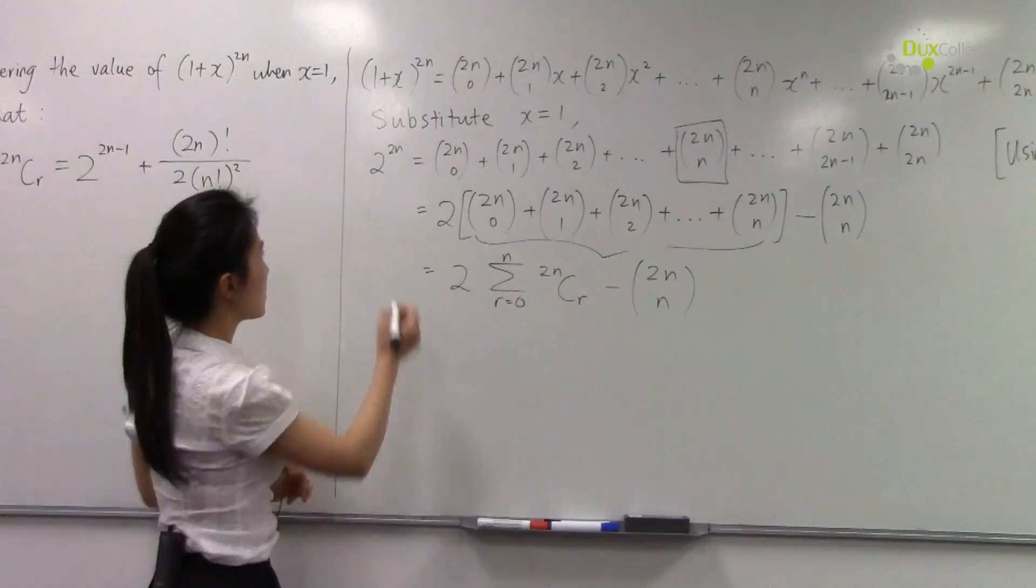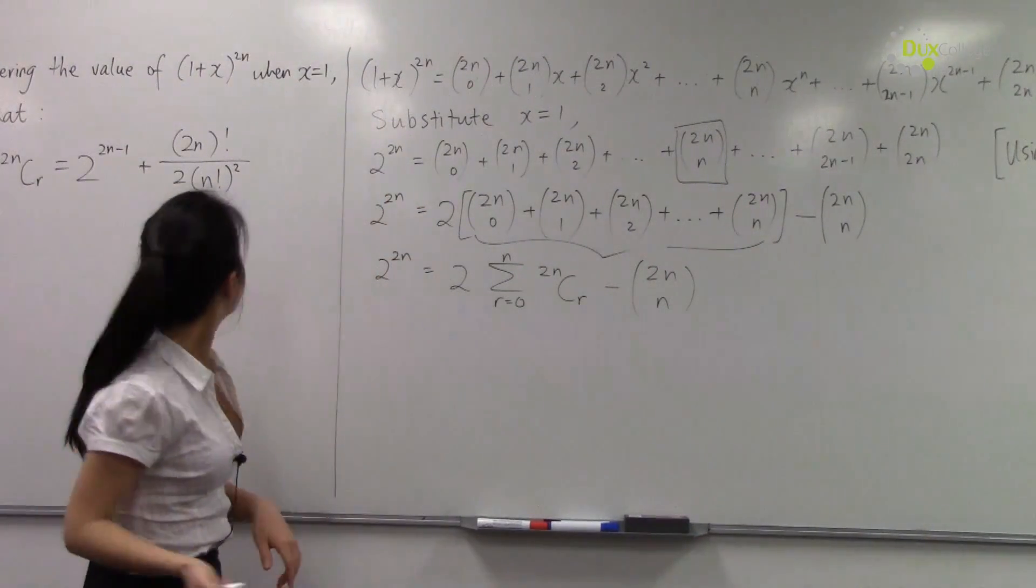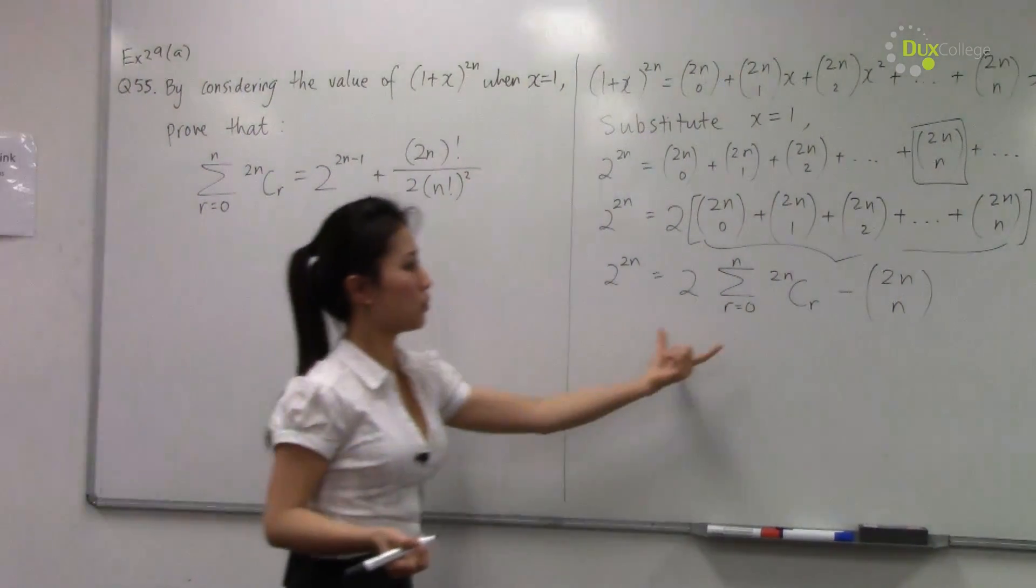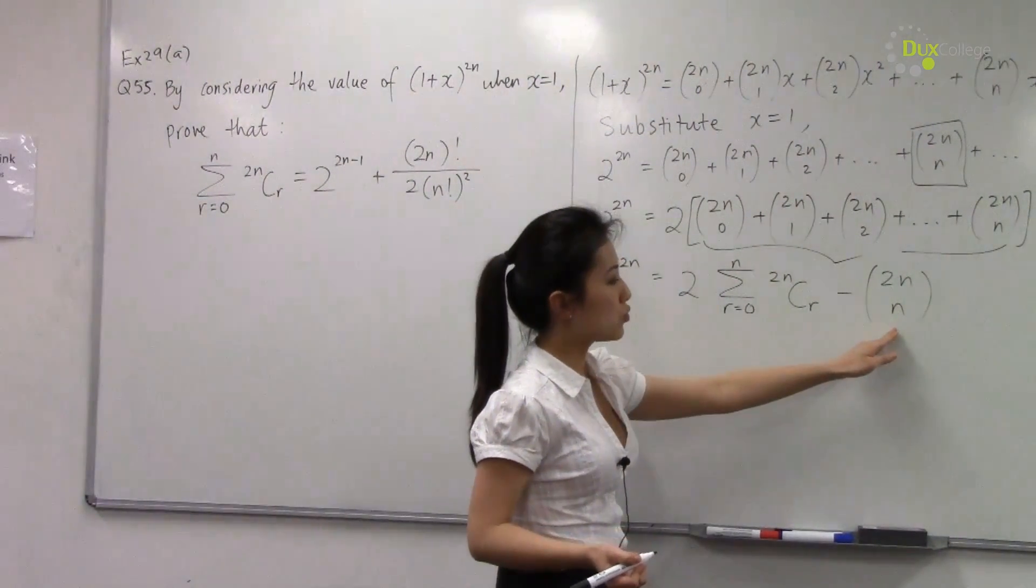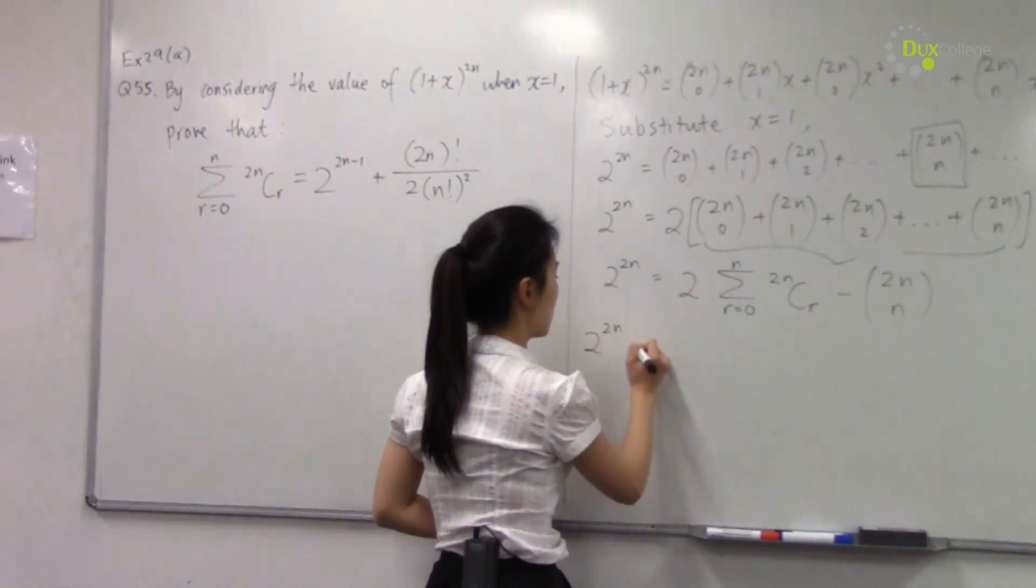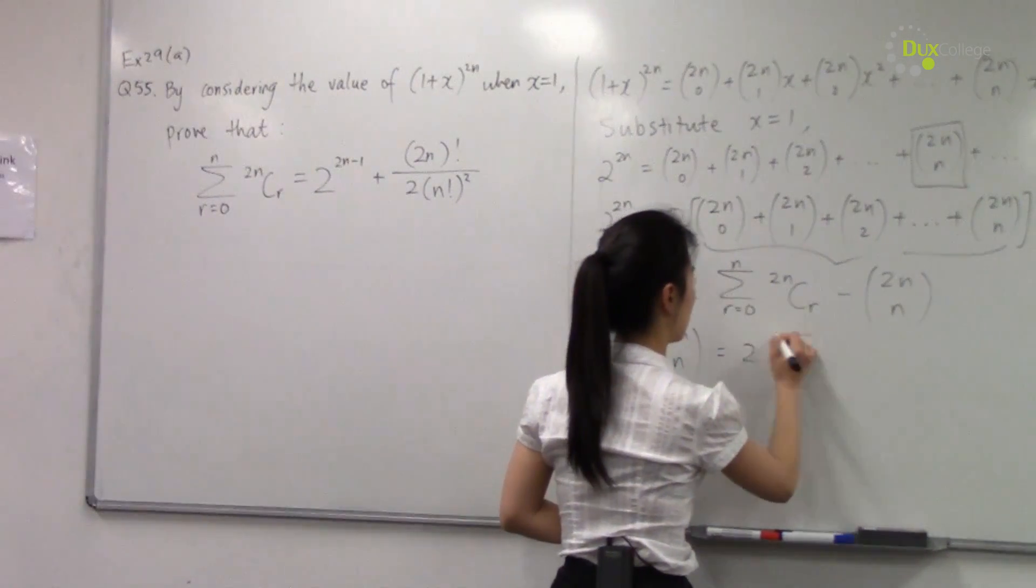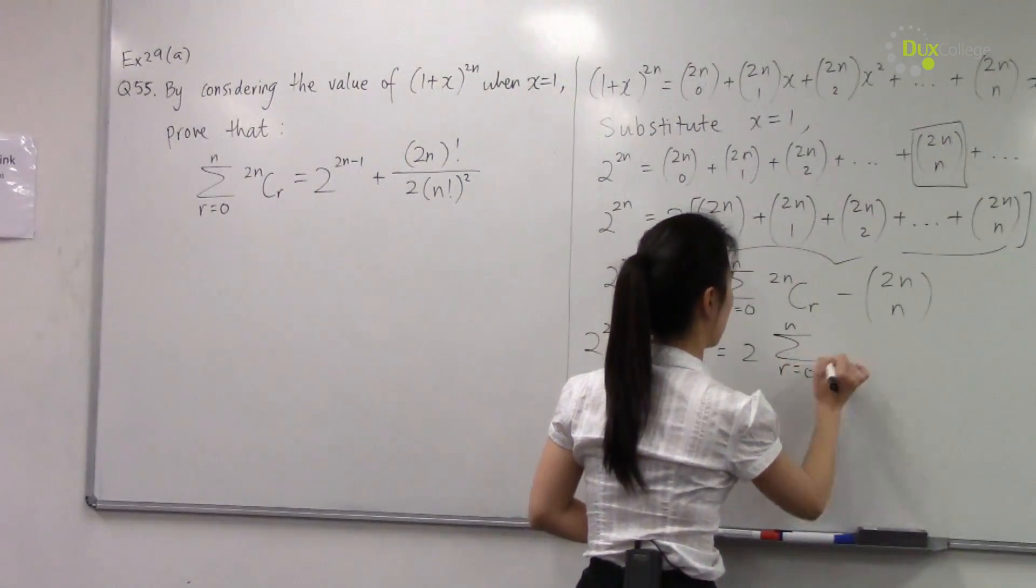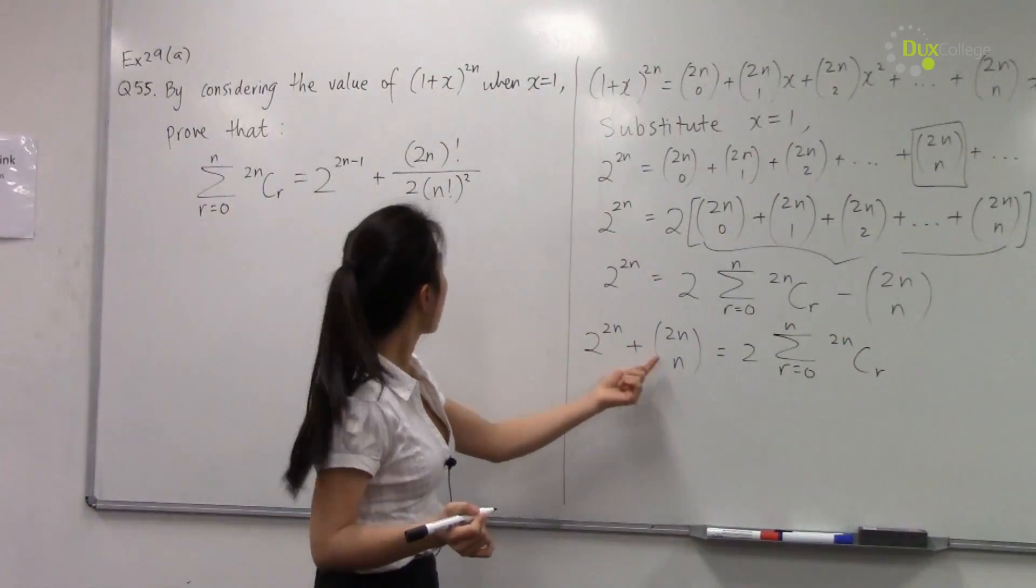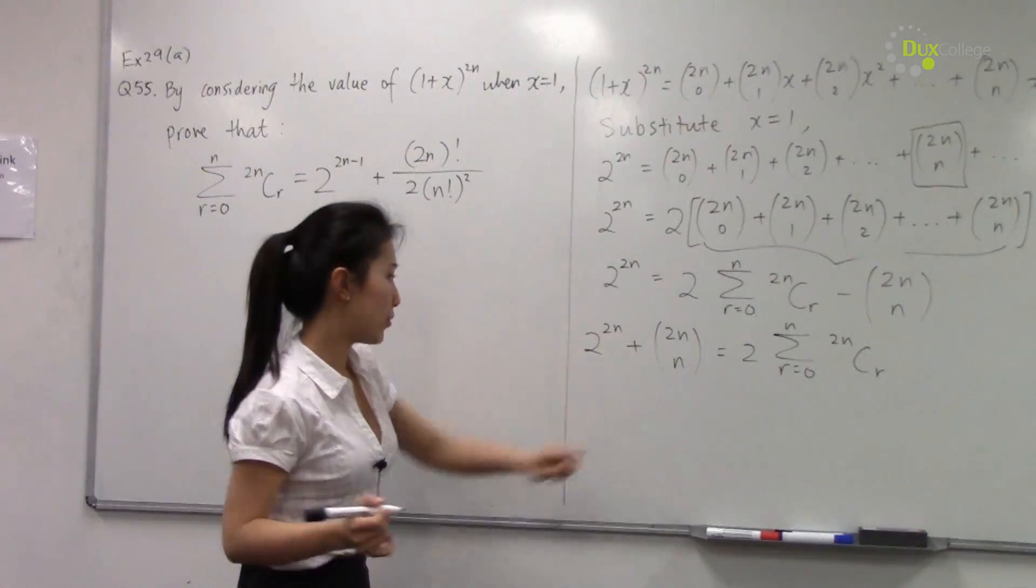Now our left hand side still equals 2 to the power 2n. What we need to do is make this the subject, so what we should do is move 2n choose n to the left hand side. Okay, and we should expand this in factorial form.